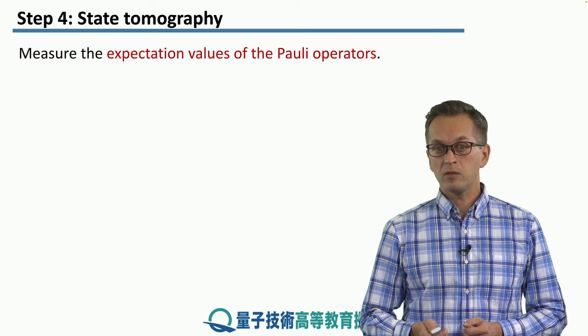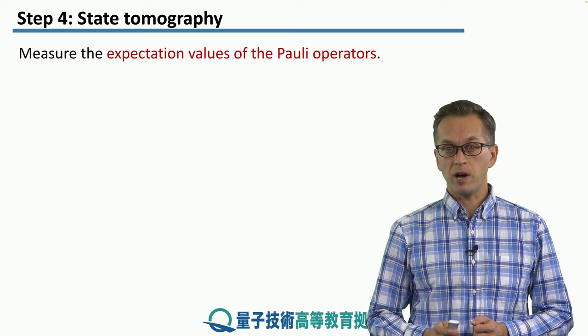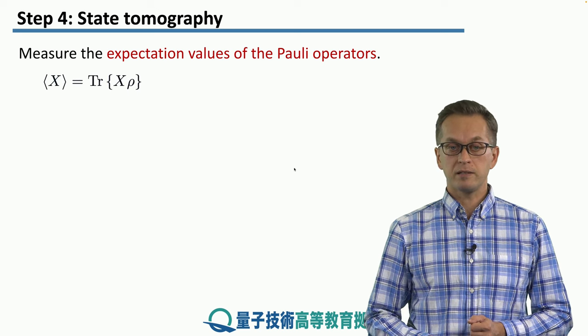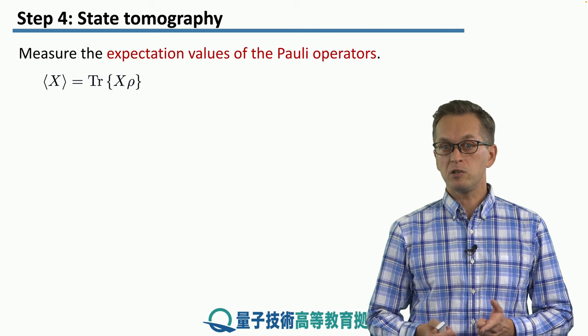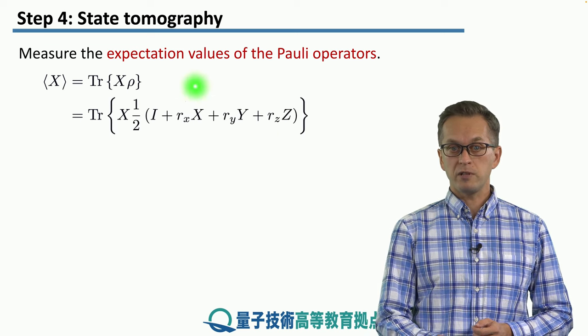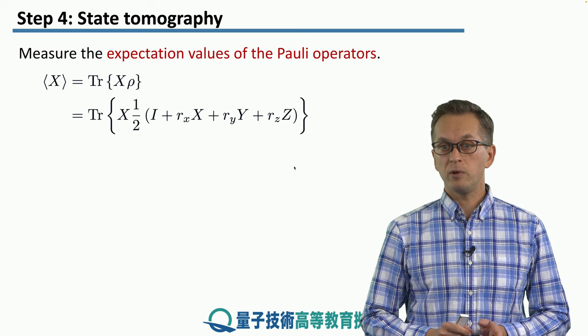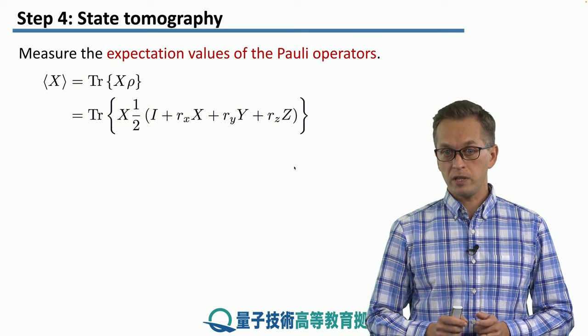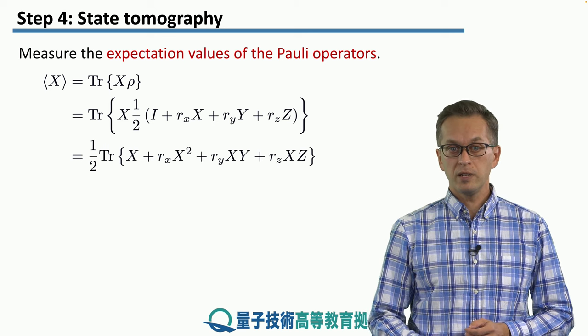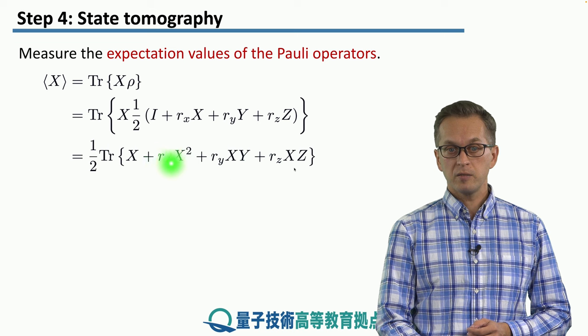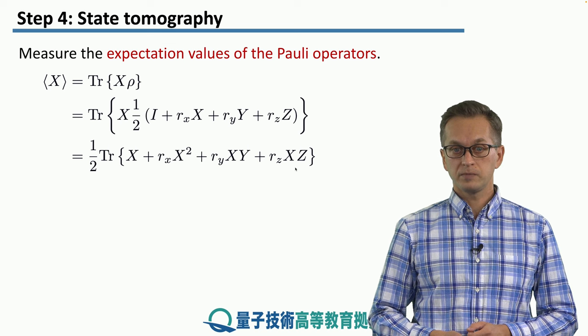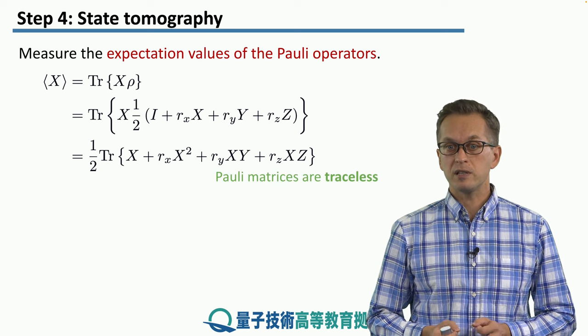Well, we can measure the expectation value of the Pauli operators, and here is why. Let's consider what the expectation value is for the Pauli X operator. We know the expectation value can be written as the trace of the operator times the state. So if we substitute for our state ρ our previous expression in terms of the inner product between the Bloch vector and the Pauli matrices, we get the following expression. Now we're just going to multiply everything by the Pauli X operator, and we get the following sum: X plus rₓ times X squared plus rᵧ of X times Y, and so on.